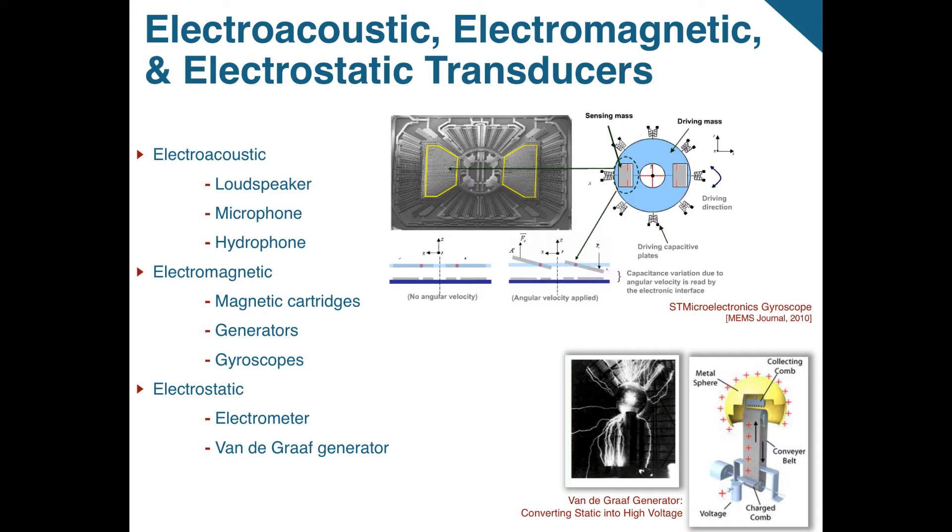Common electromagnetic transducers include magnetic cartridges and generators, which convert motion in a magnetic field into an electrical signal. Electromagnetically driven and sensed MEMS gyroscopes are used widely in smartphones and tablets. These gyroscopes use a permanent magnet and a resonating ring to detect rotation or motion. The detected motion creates a capacitive charge within the device.